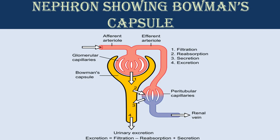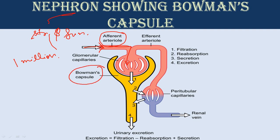Now we will discuss the structure of the nephron. Nephrons are the structural and functional unit of the kidney. Every adult kidney contains around one million nephrons. Blood arrives at the kidney through the renal artery, which then splits into many afferent arterioles. These arterioles go into a capsule known as Bowman's capsule of the nephron, where wastes are taken out of the blood by pressure filtration. This pressure filtration is called ultrafiltration.